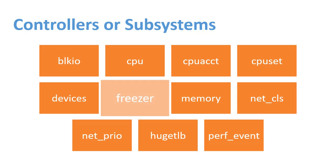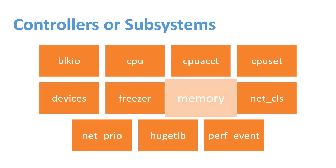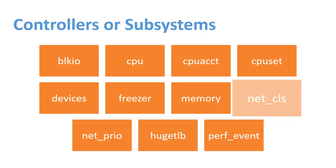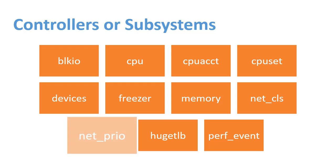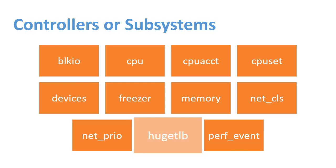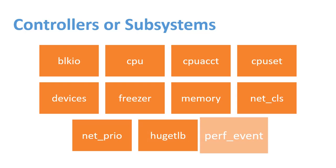Freezer, which suspends or resumes tasks. Memory, which sets limits on memory use by tasks and generates automatic reports on memory resources used by those tasks. Net_CLS, which tags network packets with a class identifier that allows the Linux traffic controller to identify packets originating from a particular task. Net_Prio, which provides a way to dynamically set the priority of network traffic per network interface. HugeTLB, which limits huge TLB size usage. Perf_event, which identifies cgroup membership of tasks and can be used for performance analysis.